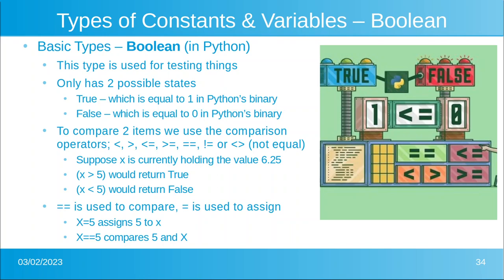Now equals and not equals are sort of different than what you might be used to. To compare, you use equals equals, because a single equals is used to assign things. So if I say x equals five, that puts the number five into a variable called x. If I put x equals equals five, I am asking Python to compare x with the value five, and then it will give me either True or False. For not equal, we either use the less than sign followed by a greater than sign, meaning it's neither less than or greater than, or an exclamation mark with an equal sign. Exclamation marks in Boolean terminology are pronounced 'not.'